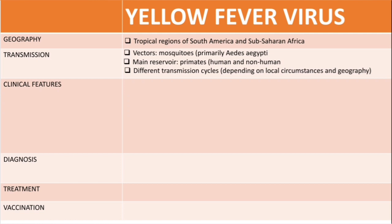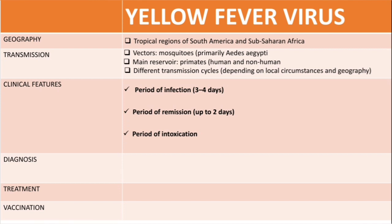Regarding clinical features, patients infected with this virus are usually asymptomatic. If symptoms do appear, classic yellow fever has three stages: the period of infection (three to four days), the period of remission (up to two days), and the period of intoxication. The period of infection is characterized by high fever up to 41°C, headaches, chills, nausea, and vomiting. The period of remission is when symptoms subside and fever finally declines.